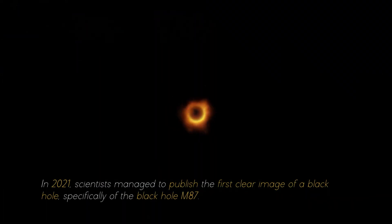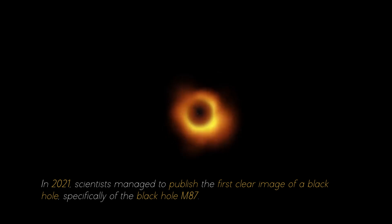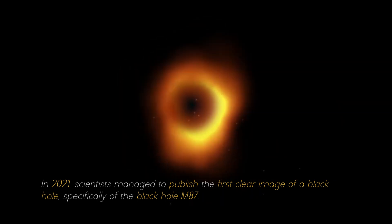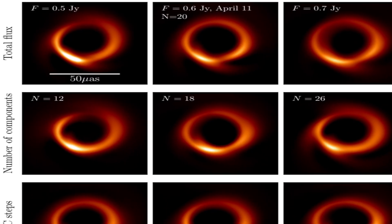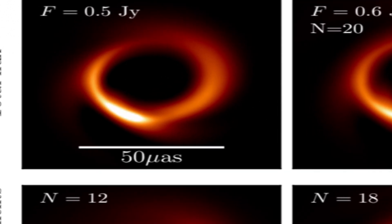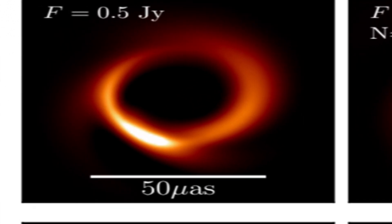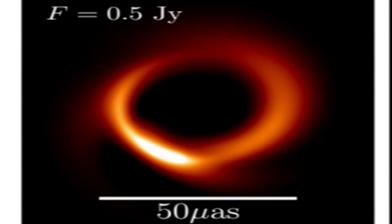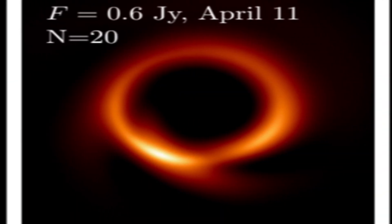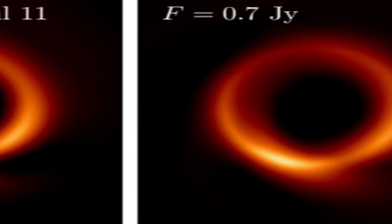In 2021, scientists managed to publish the first clear image of a black hole, specifically of the black hole M87. For several consecutive nights, photographs of the black hole were taken, and with each image researchers collected more evidence about it. It was necessary to combine the individual photographs to obtain a complete image that filled in all the gaps.